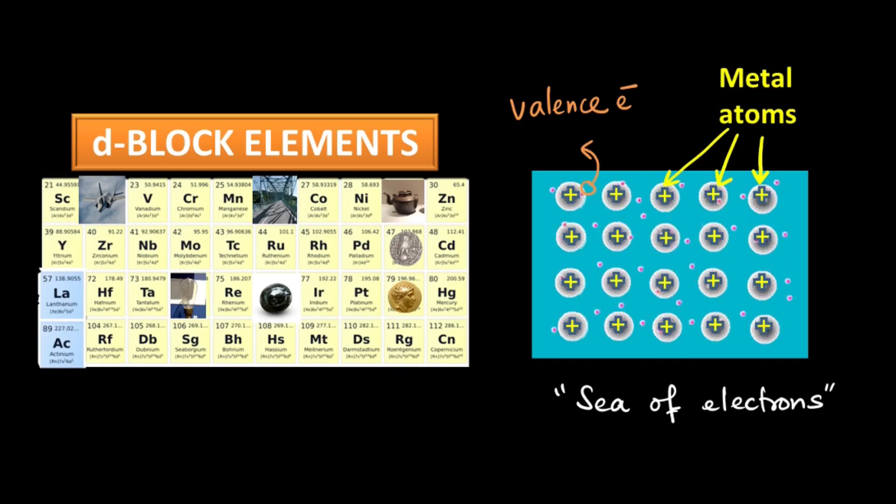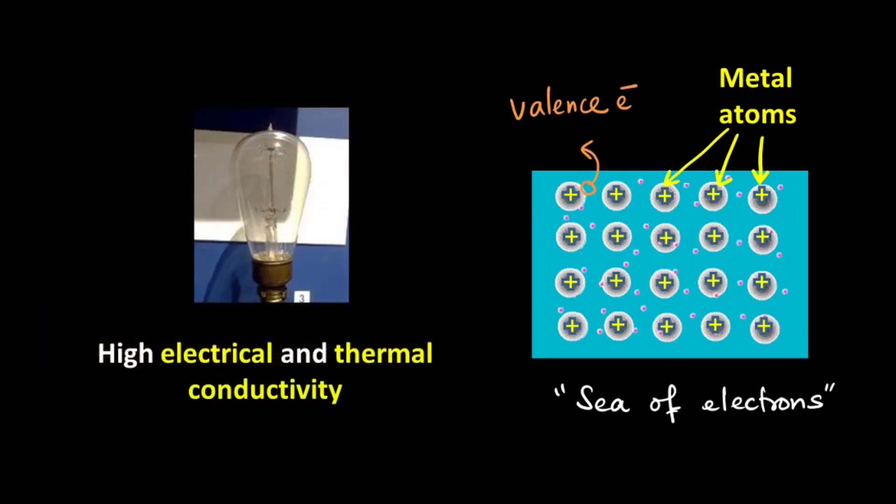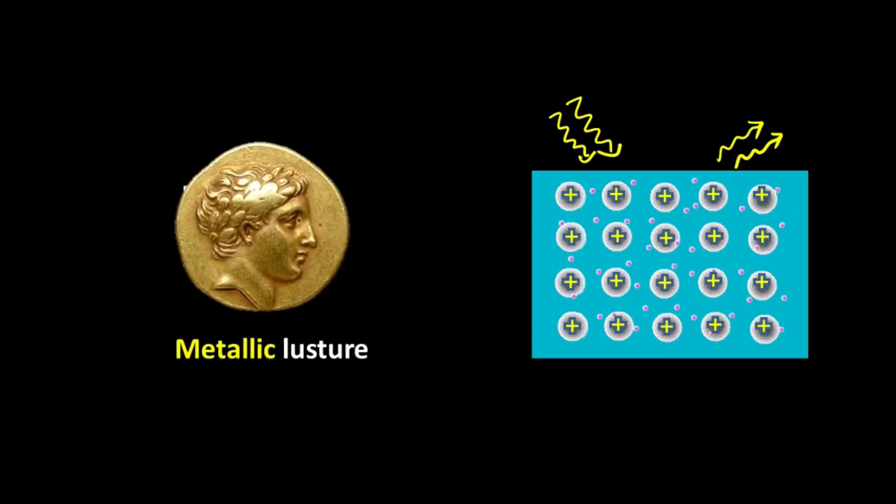Now because these electrons are mobile, they can conduct electricity as well as heat and thus the d-block elements are good conductors of heat and electricity. These electrons can also absorb and emit light of various frequencies and this gives rise to the characteristic metallic luster that we see.